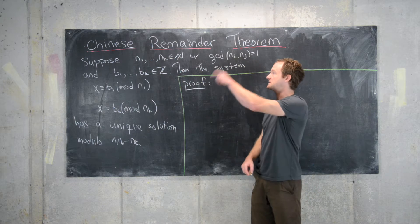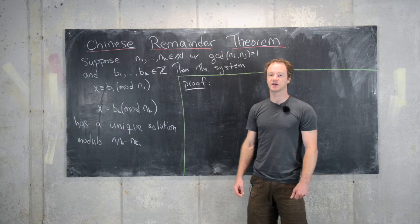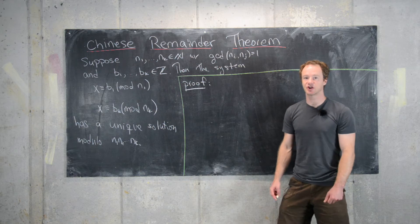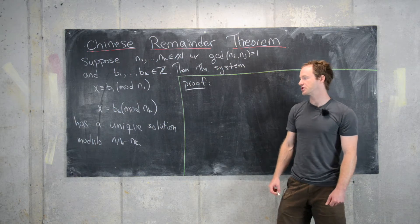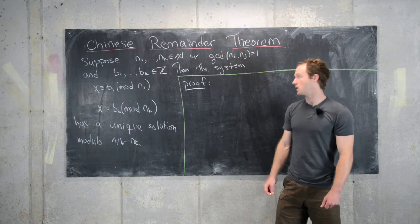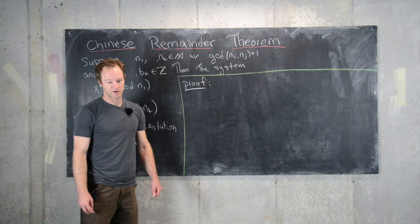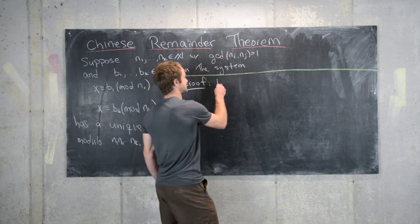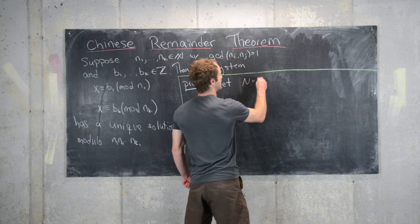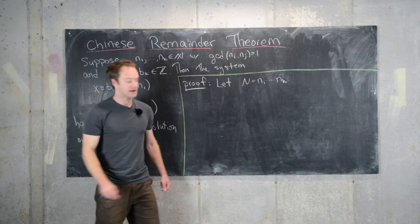This is the statement, and now we'll look at the proof. The proof is a constructive proof: we'll first construct a solution and then show that this solution is unique up to this modular equivalence. The first thing we want to do is consider the following numbers. Let capital N equal the product n_1 through n_k.